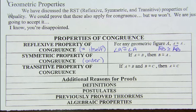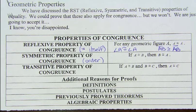The transitive property is another one that we're going to use quite a bit. The transitive property of congruence basically says that if A is congruent to B, and B is congruent to C, then A has to be congruent to C.